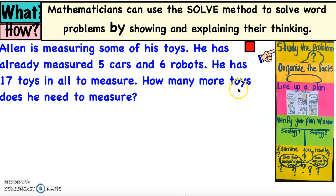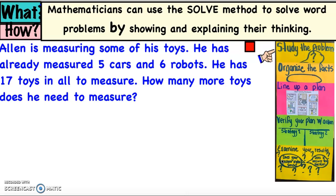Let's go over our SOLVE steps. We're going to Study the problem — underline the question and ask ourselves what is this problem asking us to find. Then we Organize the facts by circling every single important fact. Next we Line up a plan by choosing two different strategies. We use those strategies to Verify our actions. Then we Examine our results by asking: does that answer make sense, and does it answer the question?